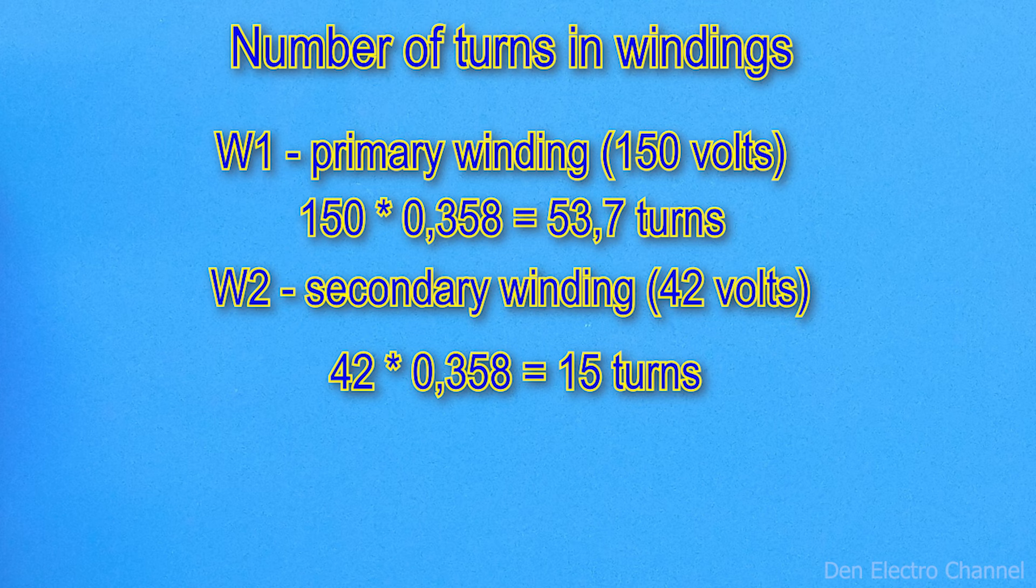Just don't forget that our secondary winding consists of two half windings, each of which operates on its own half cycle. It turns out that you need to wind two windings of 15 turns each.